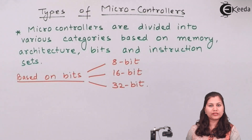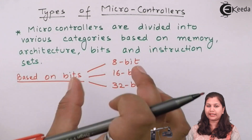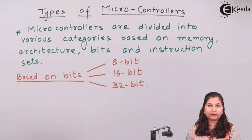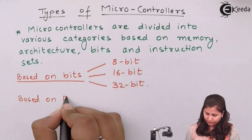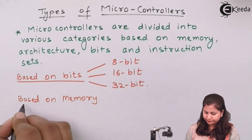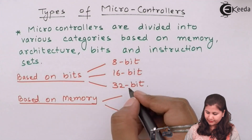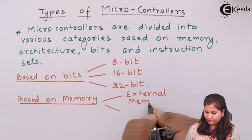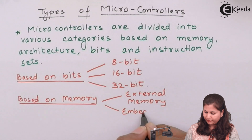How many bits the microcontroller is using — whether 8-bit, 16-bit, or 32-bit — is the basis for that categorization. Next, based on memory, microcontrollers are divided into two categories: external memory and embedded memory.